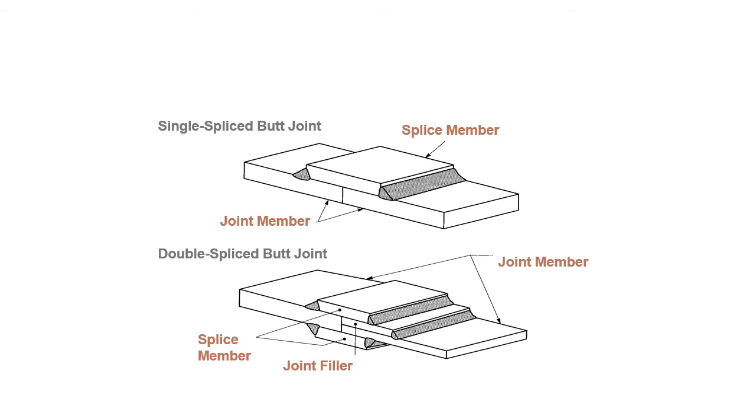Then you've got a double spliced butt joint on the bottom where they've got filler pieces and they've got a couple of splice members and then you've got the joint members. So you've got a couple of options when you're doing a spliced joint, but these are examples of a spliced joint and what they'd look like out in the field.